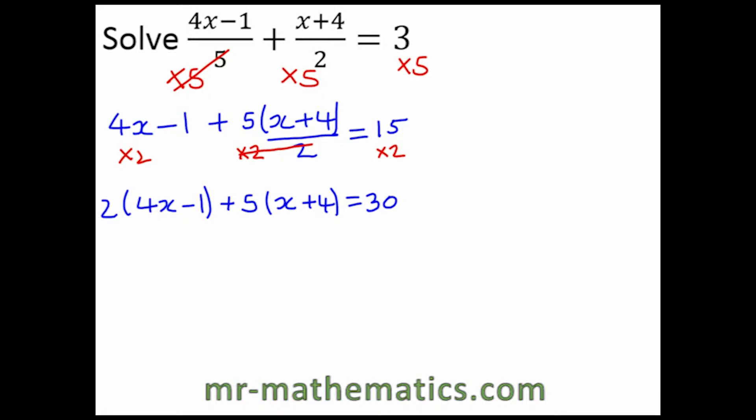Now we can expand the brackets. So 2 lots of 4x becomes 8x. 2 lots of negative 1 becomes negative 2, plus 5 lots of x which is 5x, and 5 times 4 which is 20. And that equals 30.